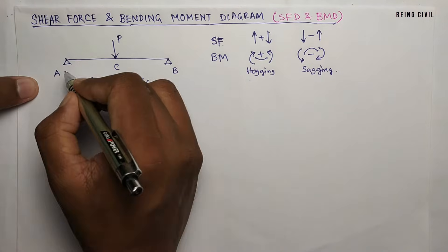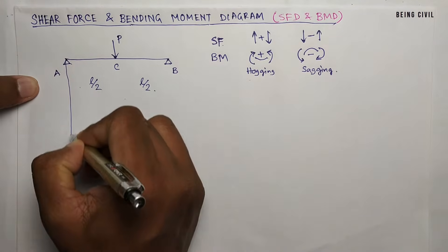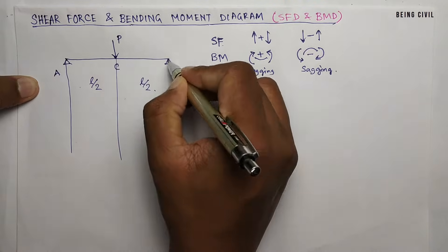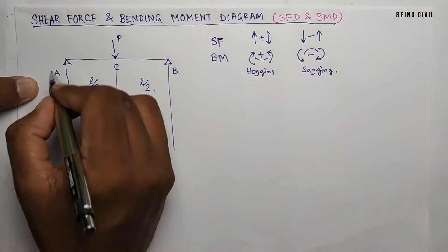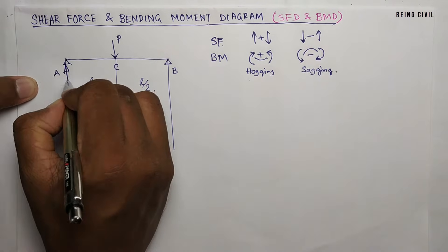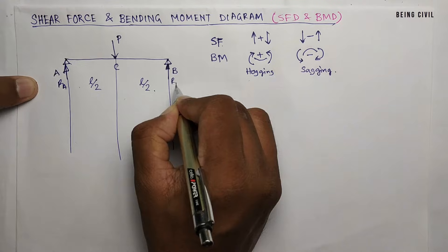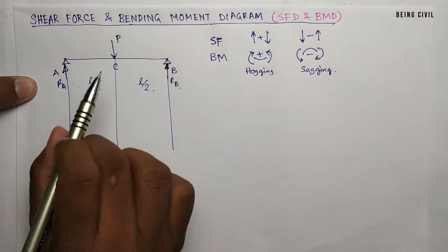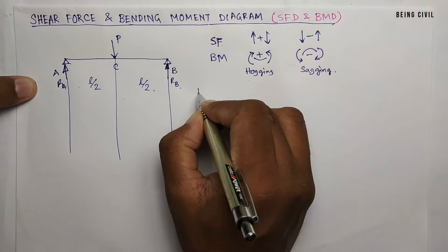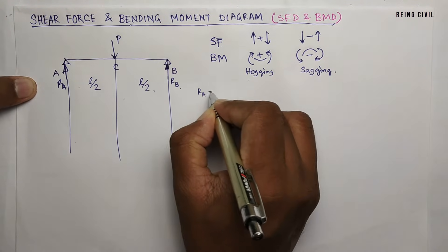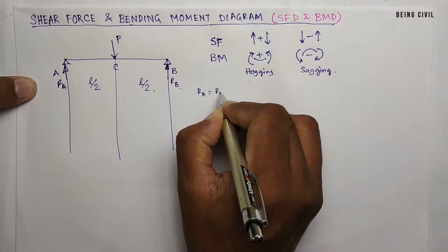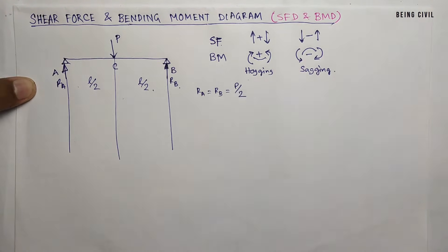So let's draw the shear force diagram for this beam. First I have to calculate the reactions. So these are RA and RB. As the force P is at the midpoint, RA and RB will each equal P by 2.